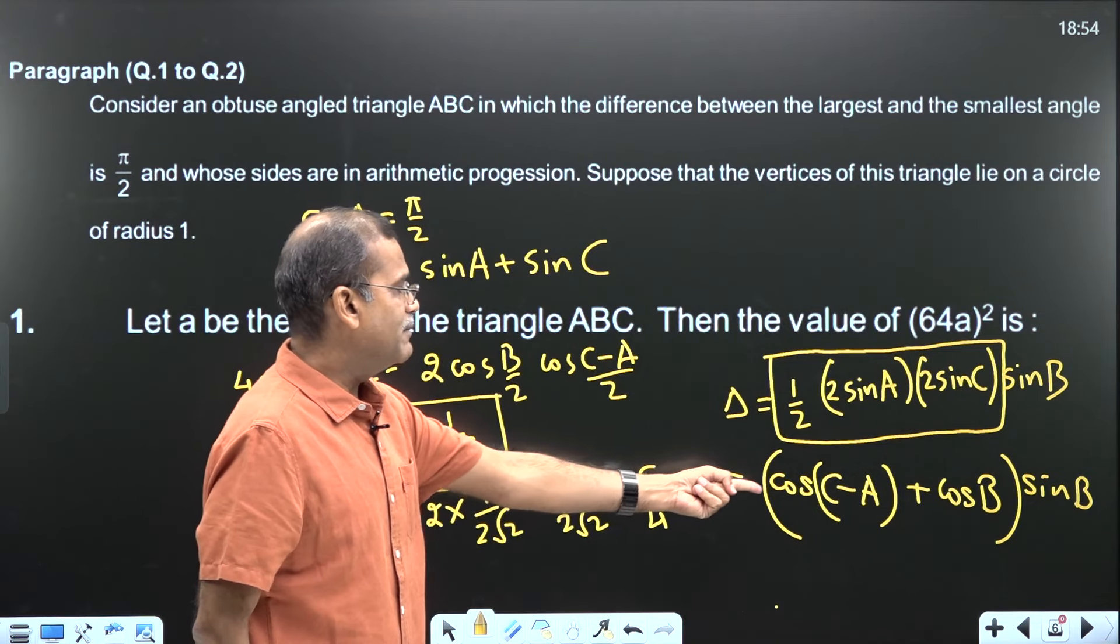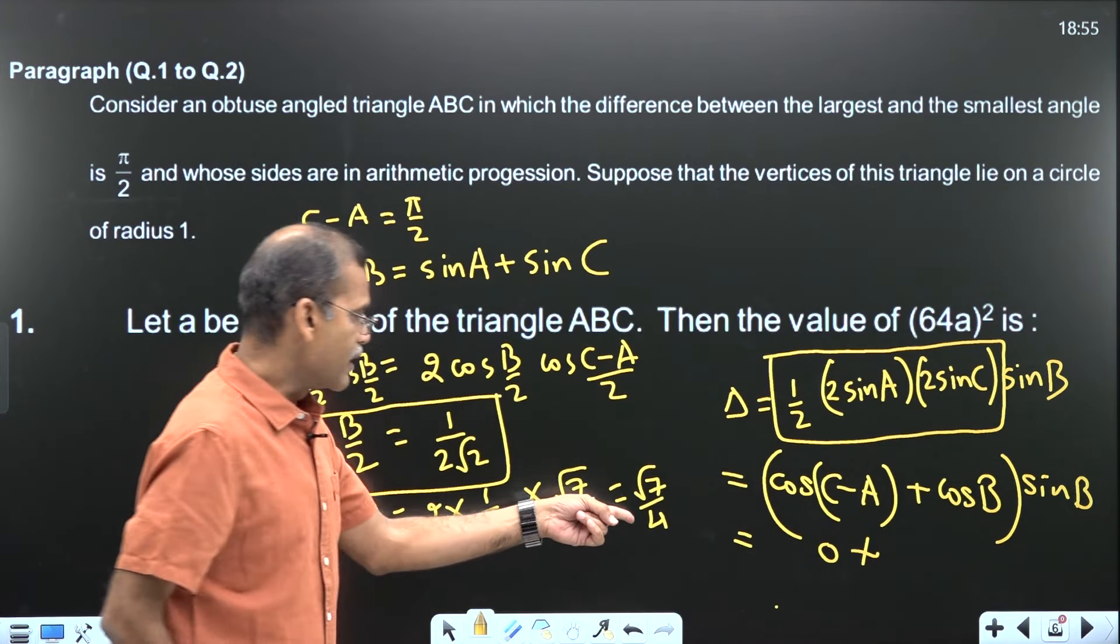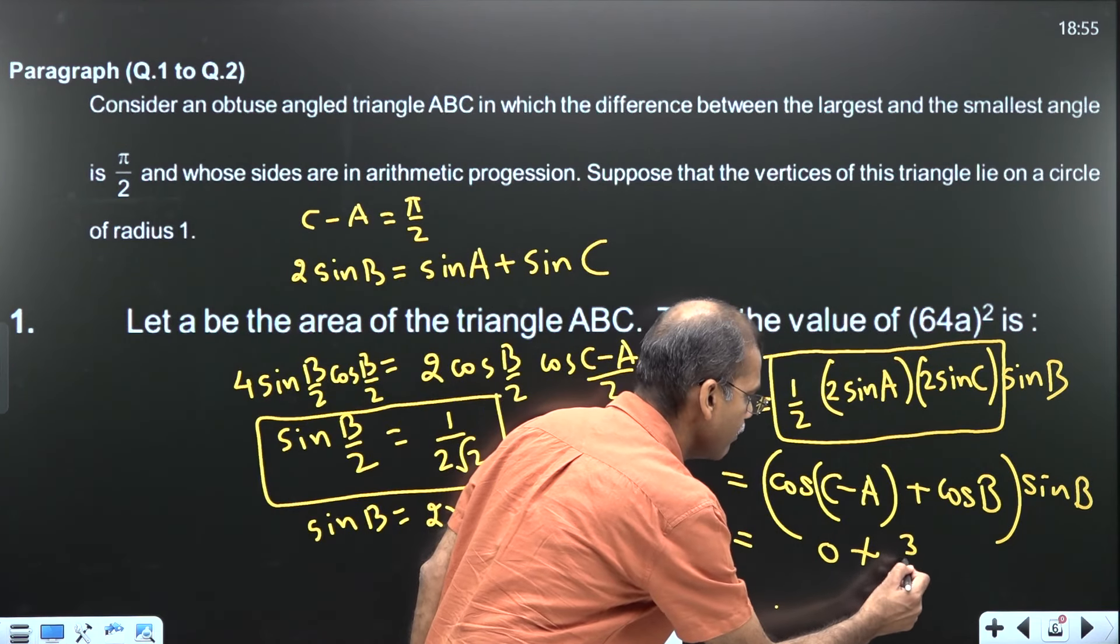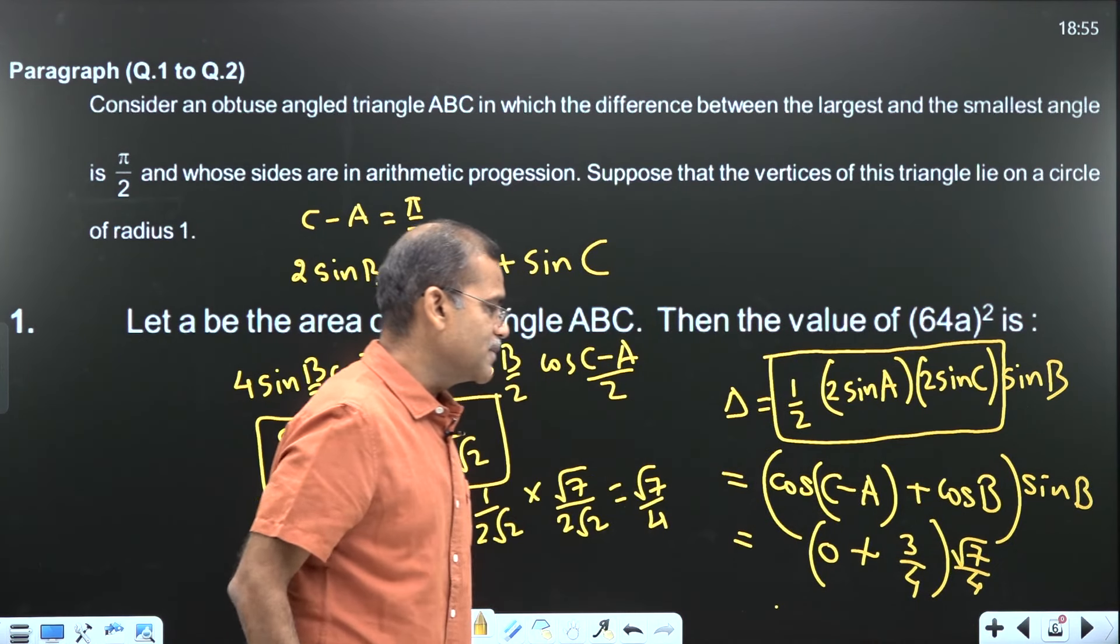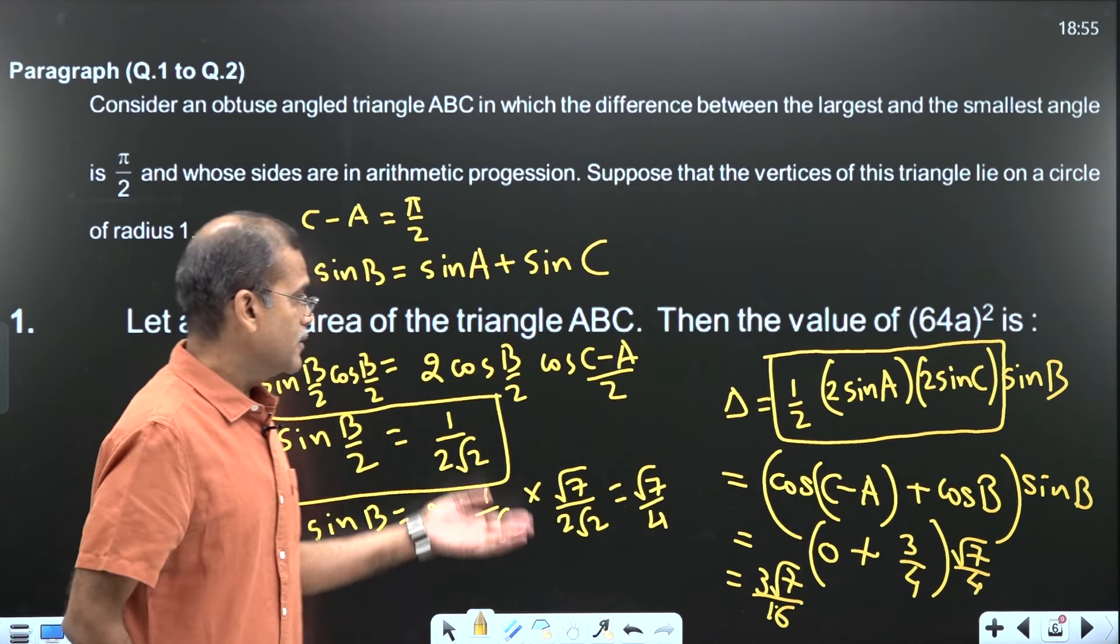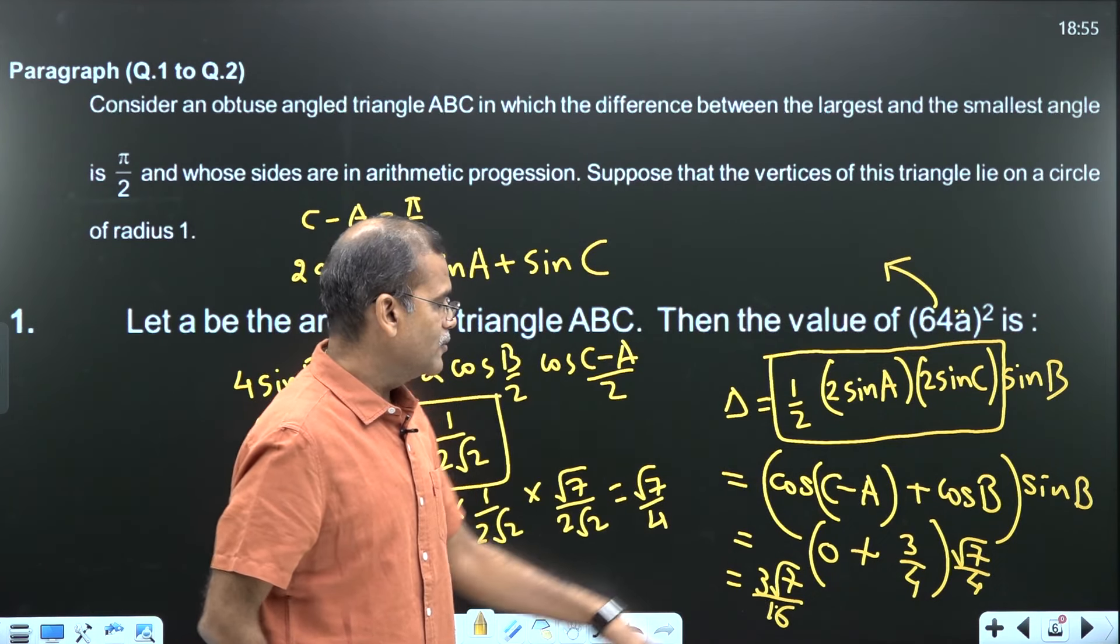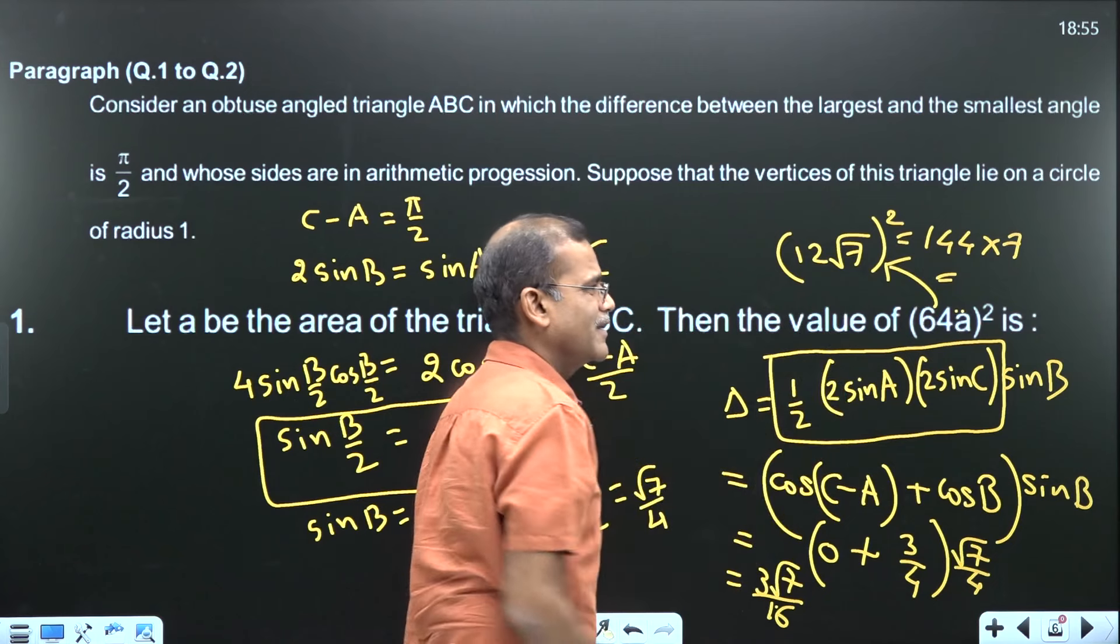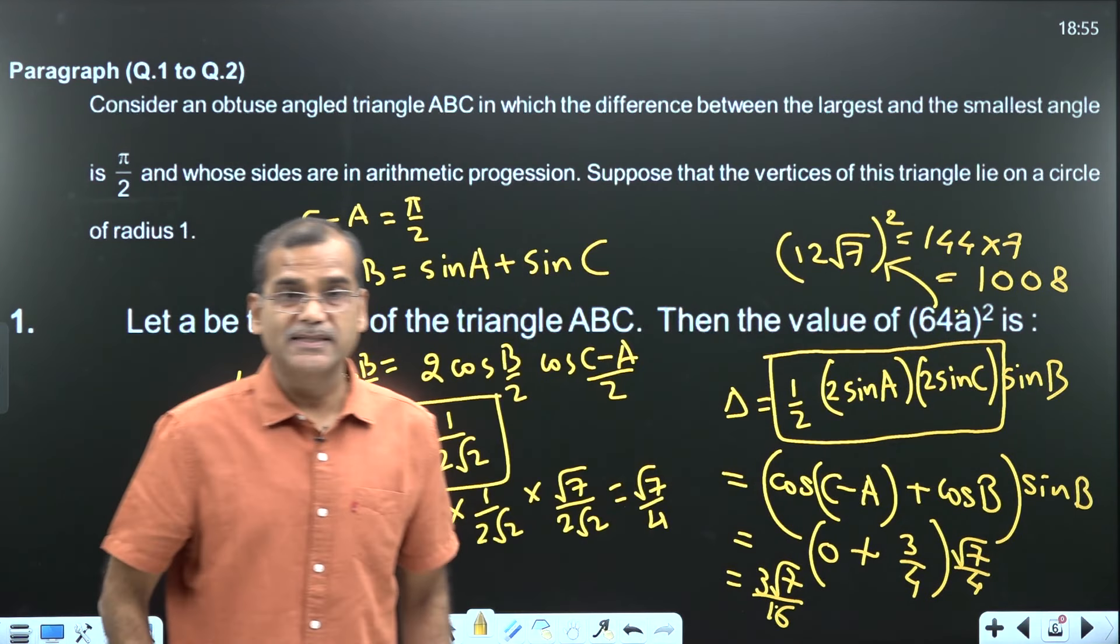Now C minus A is pi by 2, so cos pi by 2 is 0. Cos B - I had calculated sin B as root 7 by 4. So cos squared B is 1 minus 7 by 16, which is 9 by 16. Cos B is 3 by 4. Calculation is your part. Sin B is root 7 by 4. So area comes out to 3 root 7 by 16. Now what is asked from you is 64A. So 64 times 3 root 7 by 16 is 12 root 7, squared is 144 times 7. You get the answer: 1008.